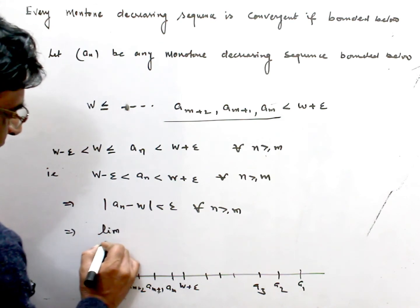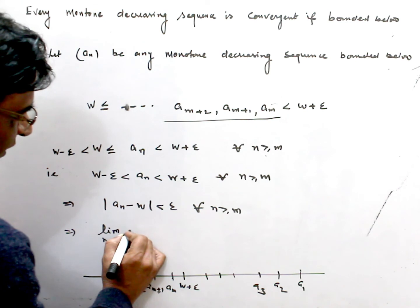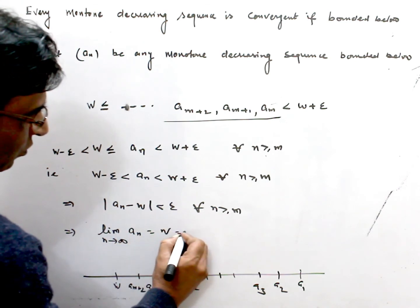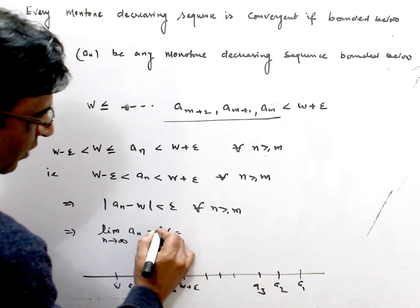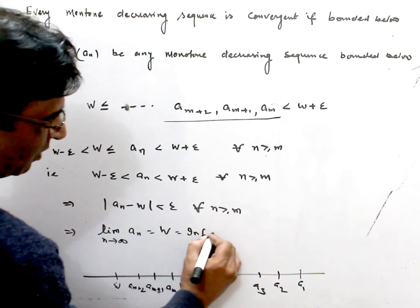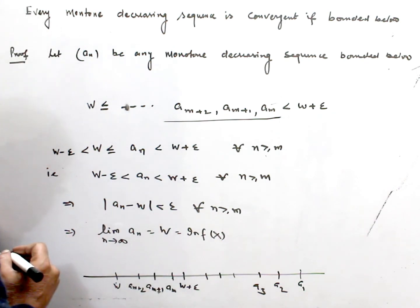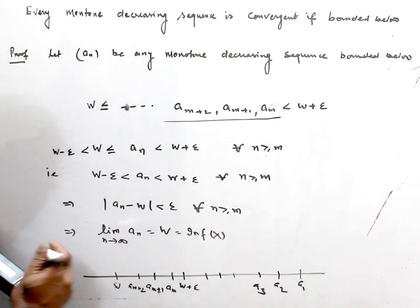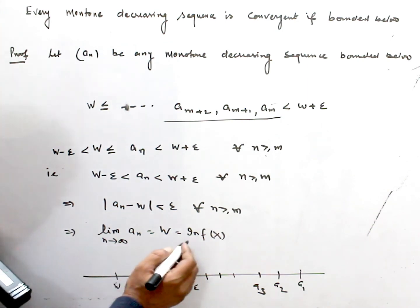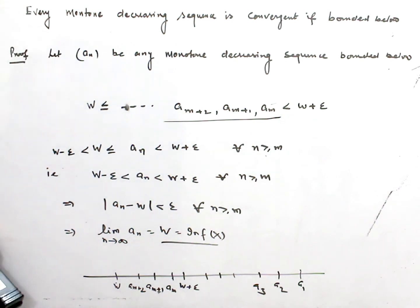And this means limit as n approaches infinity of a_n is equal to w. And w was the infimum of x. So this is the result.